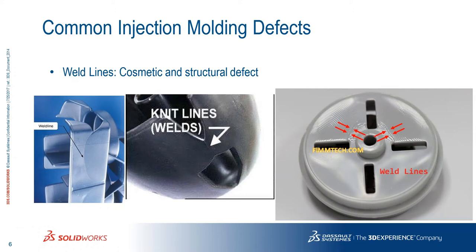Weld lines are both a cosmetic problem and a structural defect. Weld lines are detected when a flow front meets together after a hole or empty area inside your plastic part. For example, if the part is injected from one direction and the flow front comes from another direction, we expect a weld line there. It's a structural defect because that area is the weakness point inside your part.